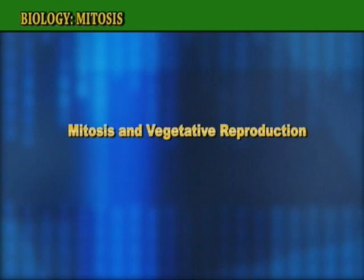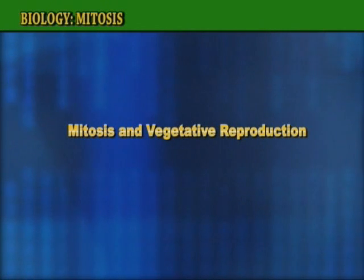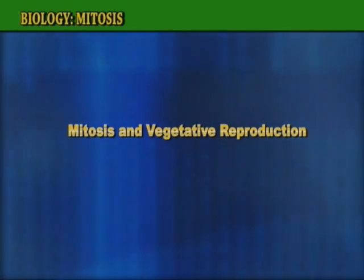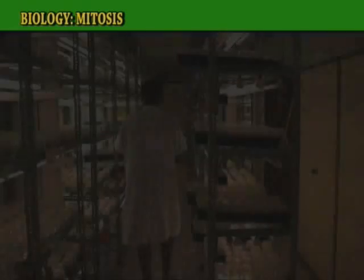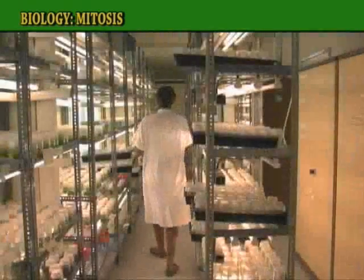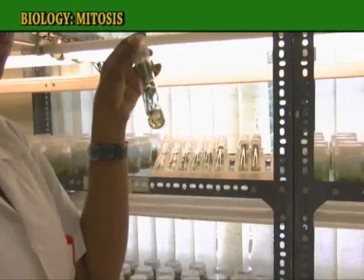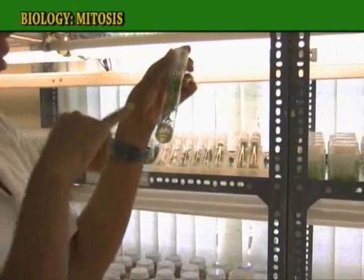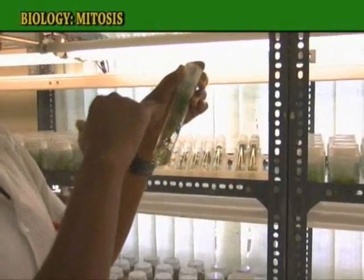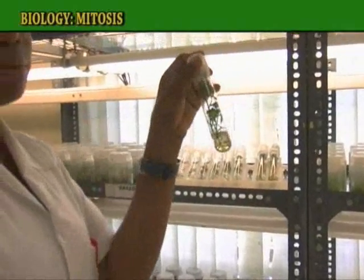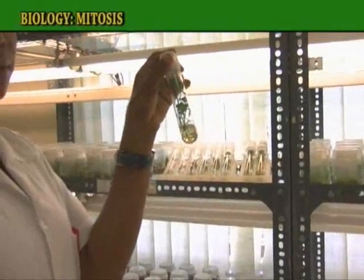Mitosis and Vegetative Reproduction. Vegetative reproduction is another form of asexual reproduction. This occurs in plants.